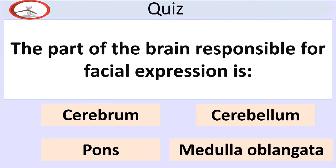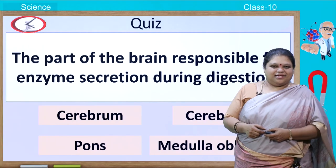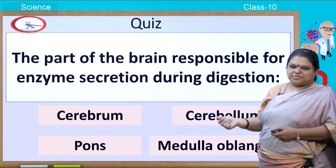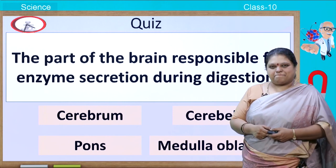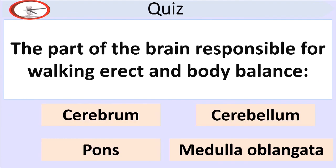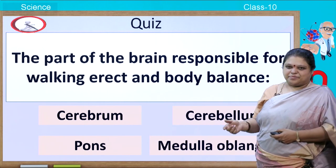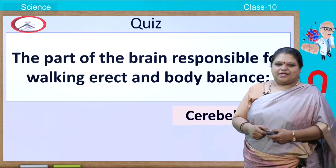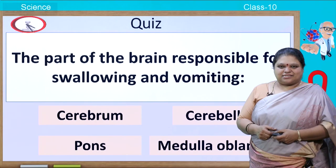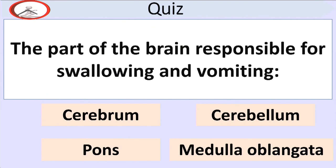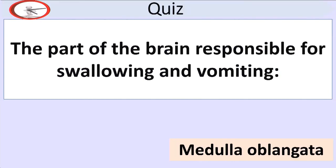Quiz time! The part of the brain responsible for facial expression — the correct answer is pons. The part responsible for enzyme secretion during digestion — the correct answer is medulla oblongata. The part responsible for walking erect and body balance — the correct answer is cerebellum. The part responsible for swallowing and vomiting — the correct answer is medulla oblongata.